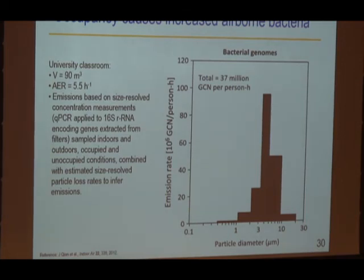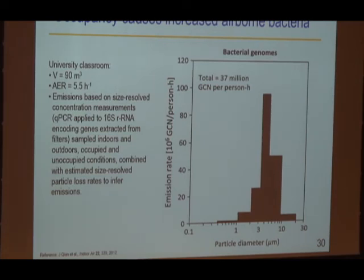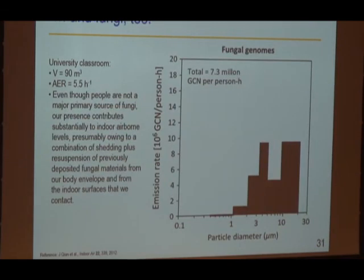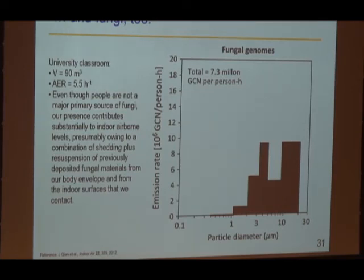Coming back to the classroom study Jordan and I participated in, we not only measured airborne concentrations but inferred from material balance modeling what emissions must have been from occupants. We ended up with 37 million genome copy numbers per person per hour—not unlike the rate at which we shed skin cells from desquamation studies. We also resuspend fungi: even though humans are not a primary fungal source, lots of fungal material has settled onto surfaces or clothing, and we resuspend it as we move about.